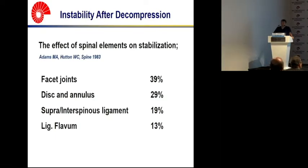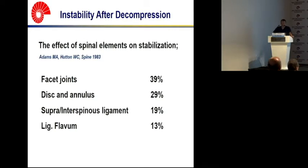In the surgical decision-making process, we have to consider the biomechanical aspects of the spine. The effect of spinal elements on stabilization was described by Adamson-Hutton in 1983. The facet joints have a major role in stabilization. The disc, annulus, and ligaments also play a role in stabilization. In classic traditional decompression surgery, most of these structures are totally or partially removed.